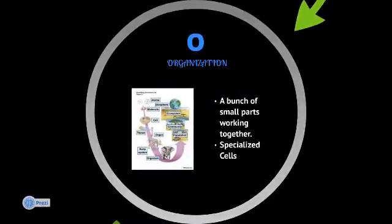O stands for organization. All biological systems, whether it be a small bacteria — a little bacteria is a system, with all these little things working together inside it to allow it to live — all the way to a gigantic ecosystem where all these animal populations are working together in harmony and supporting each other. Everything is organized. We all have a bunch of small parts working together. You have a bunch of organ systems that work together to make you work.